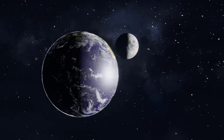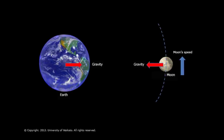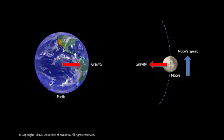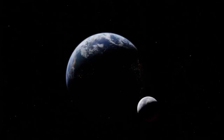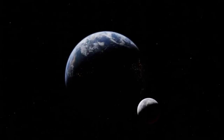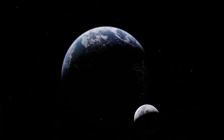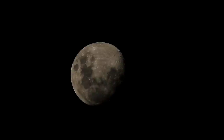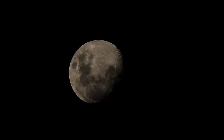The gravitational pull of the Earth on the Moon creates a tidal bulge on the lunar surface, causing the Moon to slightly deform. As the Moon orbits our planet, the gravitational forces exerted by different parts of the Earth vary, leading to tidal stresses within the Moon. These tidal stresses accumulate over time, leading to the release of energy in the form of deep moonquakes.